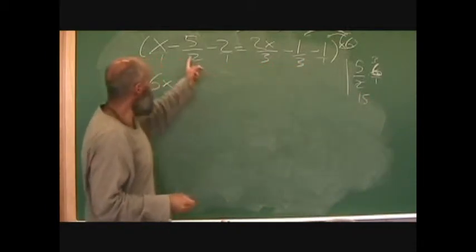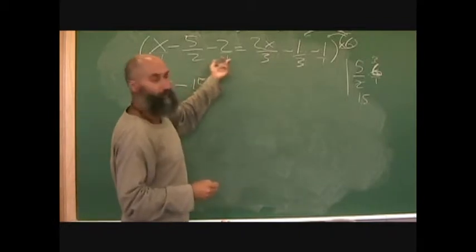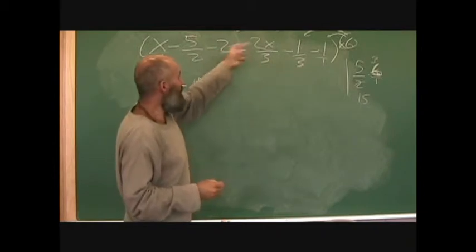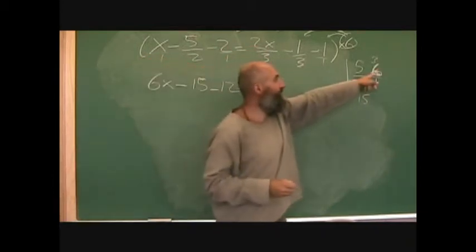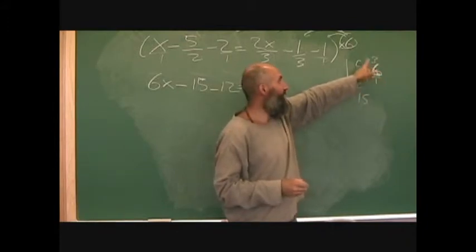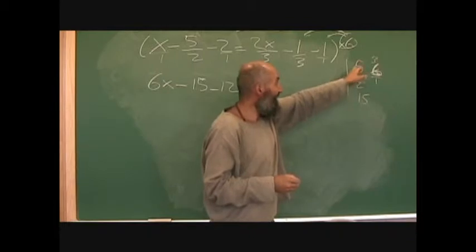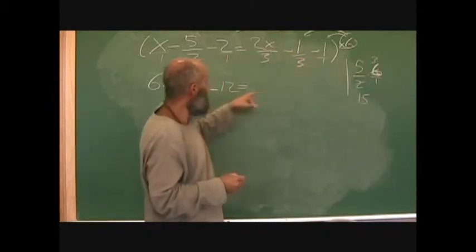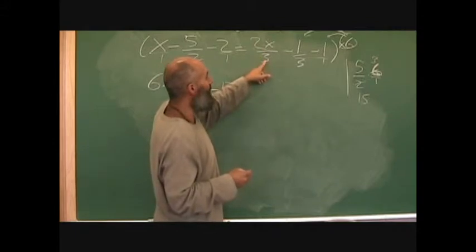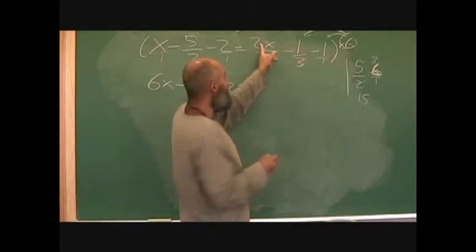So this becomes fifteen. One does nothing to six, so two times six is going to be twelve. Remember, when the two reduces the six down to three, this six is going to multiply the next term - it's not the three. Each multiplication is an individual operation. Over here, two x over three: the three reduces the six down to two, so it's only a two multiplied.